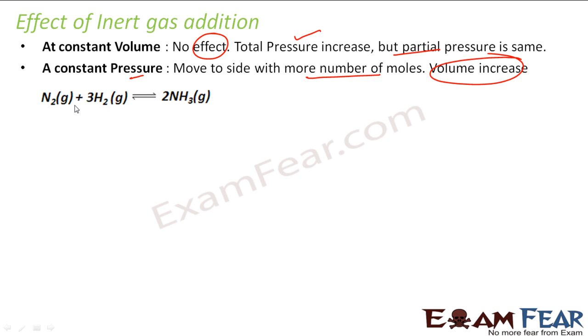So, we have an N2 example here. Let's suppose we have 2 moles here and 4 moles here. If it is constant pressure, the volume is increased, and the reaction will move in the direction with more number of moles.